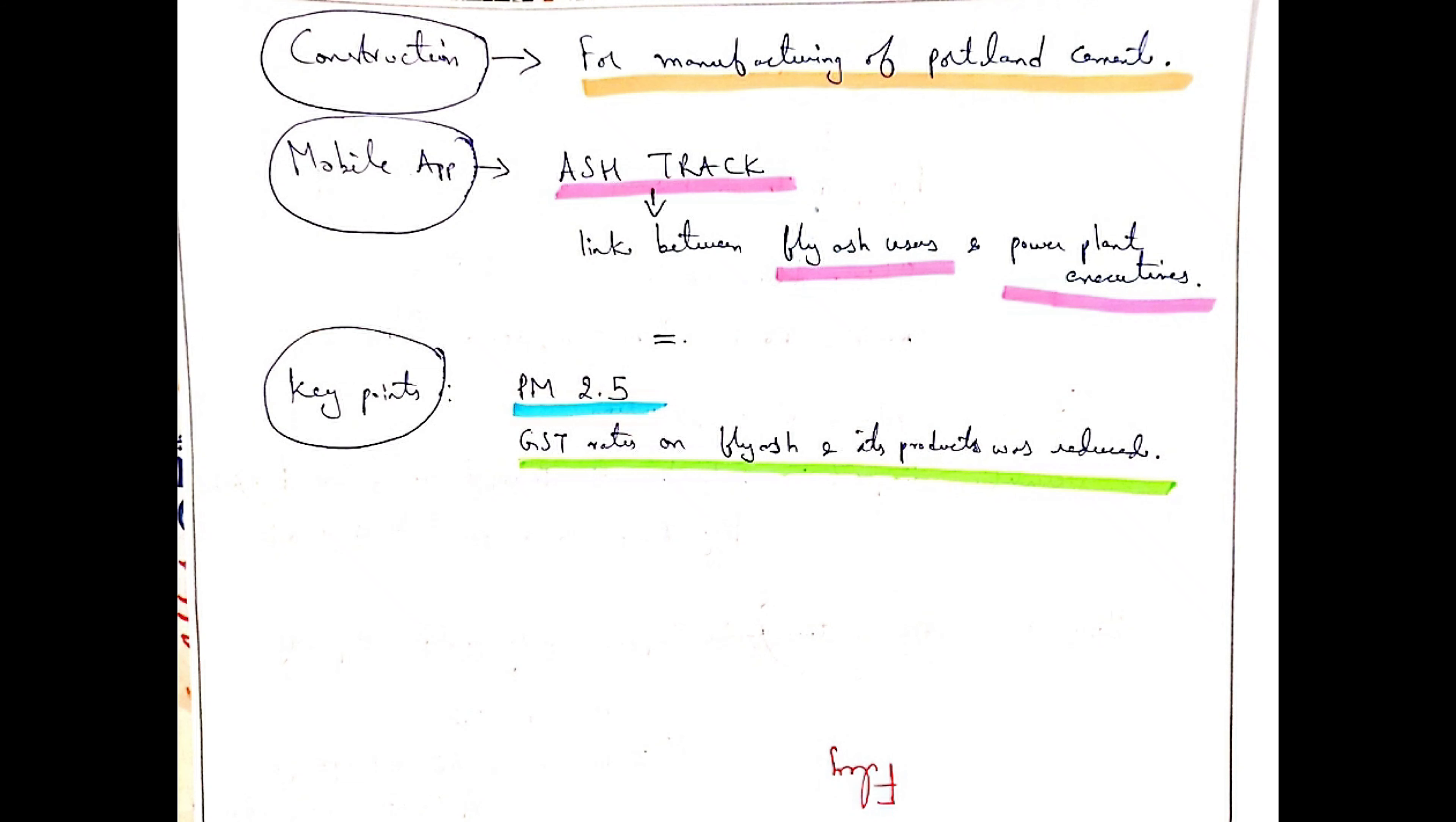Two key points about fly ash: particulate matter 2.5, and GST rates on fly ash and its products were reduced. These are the key points of fly ash. Thank you.